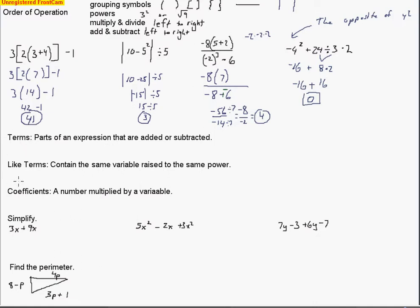The next item is vocabulary. The word is terms — terms are parts of an expression that are added or subtracted. For example, in the expression 3x + 2a − 5c + 8, the terms are the values being added or subtracted: 3x is a term, 2a is a term. Be careful with the minus sign — treat minus 5c as adding negative 5c, so negative 5c is another term. And positive 8 is the last term.